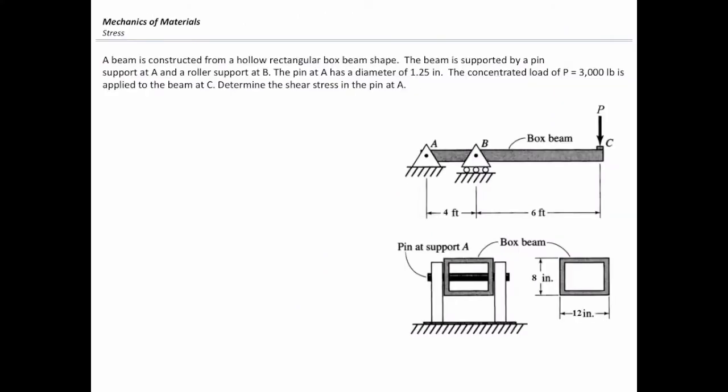The pin at A has a diameter of 1.25 inches. The concentrated load of P equal to 3,000 pounds is applied to the beam at C on the very right end.